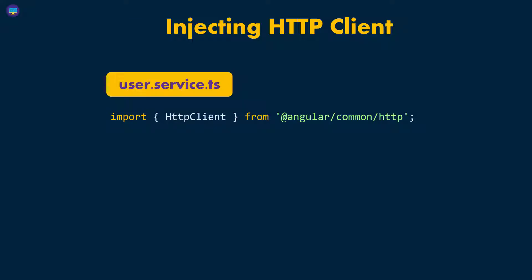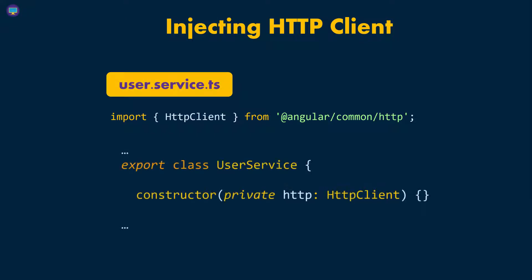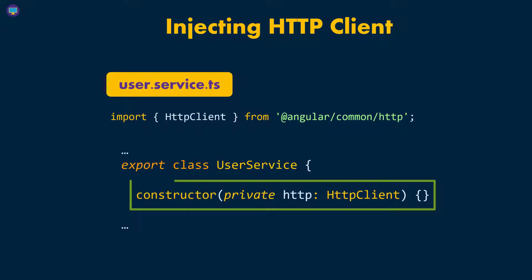Once we have that, we need to inject it in the class. The way we do this is by passing a private parameter into the constructor. As you can see, we pass in this private HTTP and give it a type of the HttpClient that we just imported. What we're really doing is passing in this HTTP as a member of the UserService class.